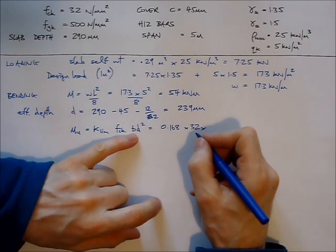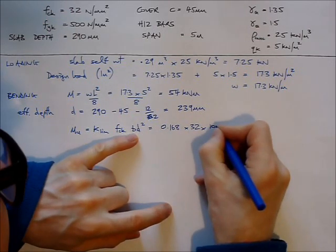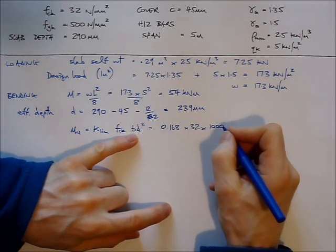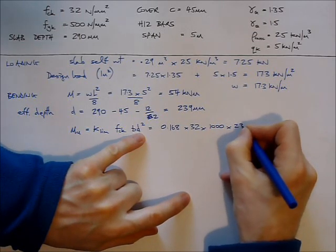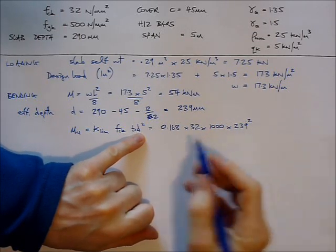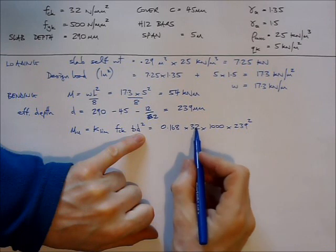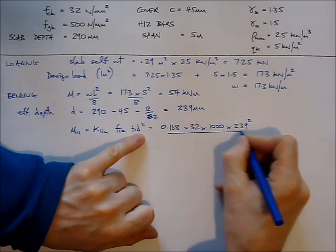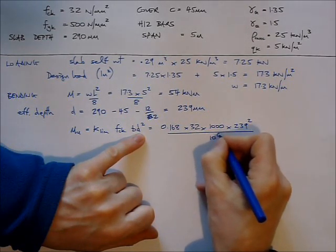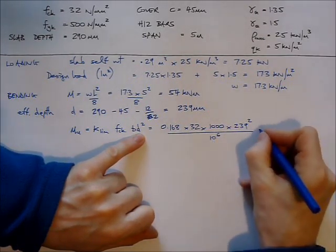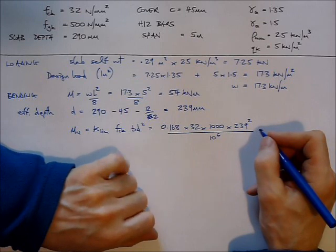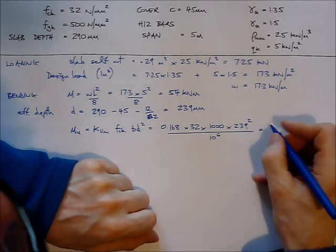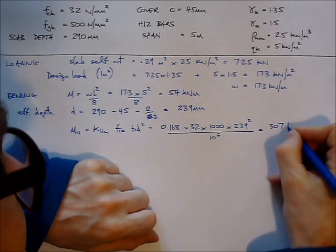We've got b, the width of the slab. Well, we're just considering the design of a meter width of slab. D is 239, all squared. This is made up of newtons per millimeter squared and millimeters squared. It's going to give me an answer in newtons and millimeters, so I want my answer to be in kilonewton meters, so I've just converted it by dividing it that way. And that all comes to 307 kilonewton meters.